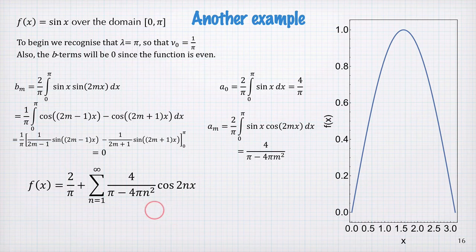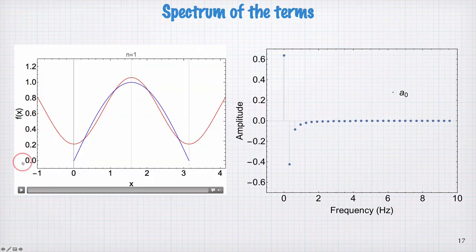Great, so we've got an infinite sum. Let's see how well it converges to our function. What I've plotted here is the 0th term, which is the offset of this function, which is 2 over π, and I've added in the first cosine term already.